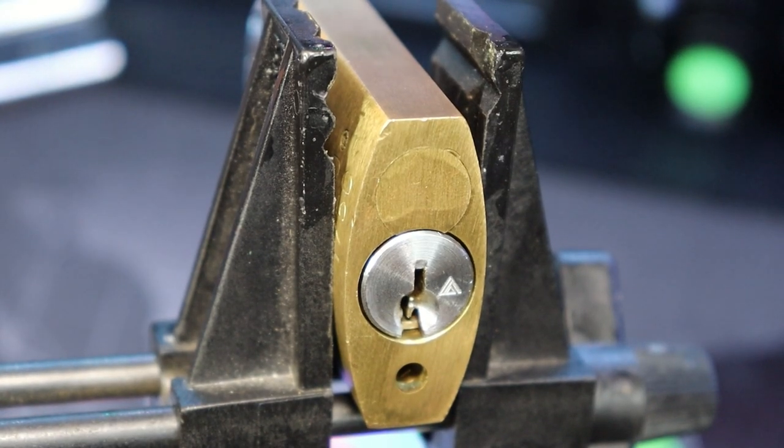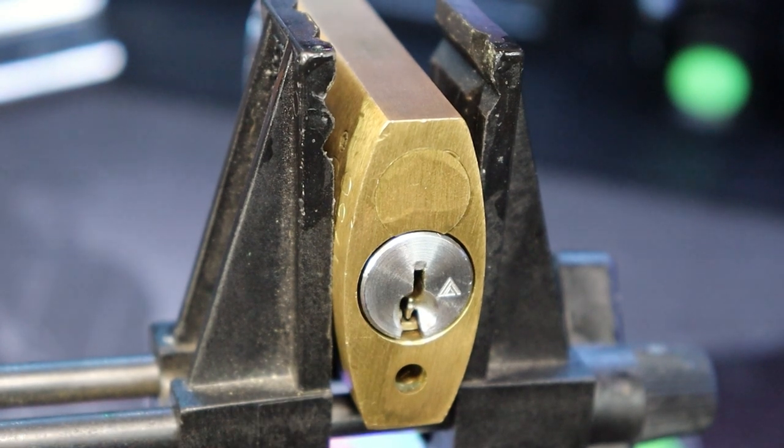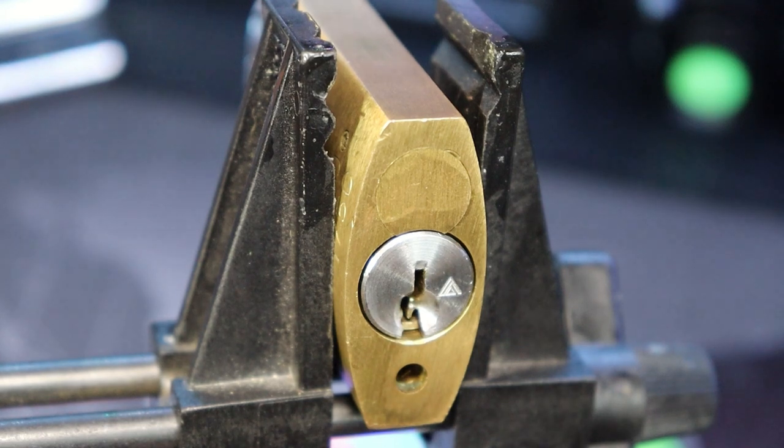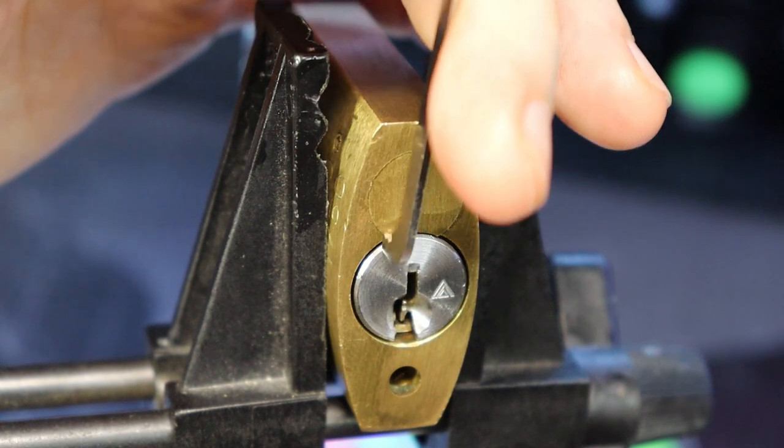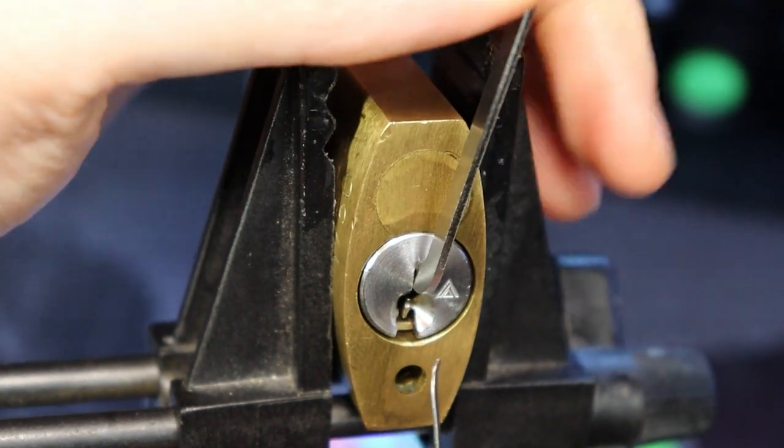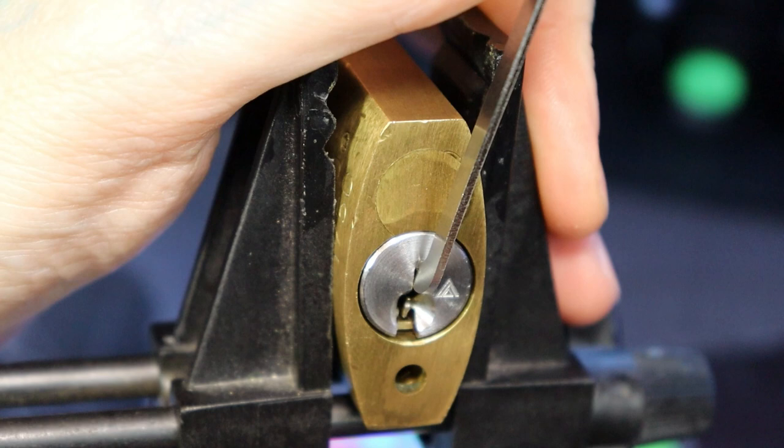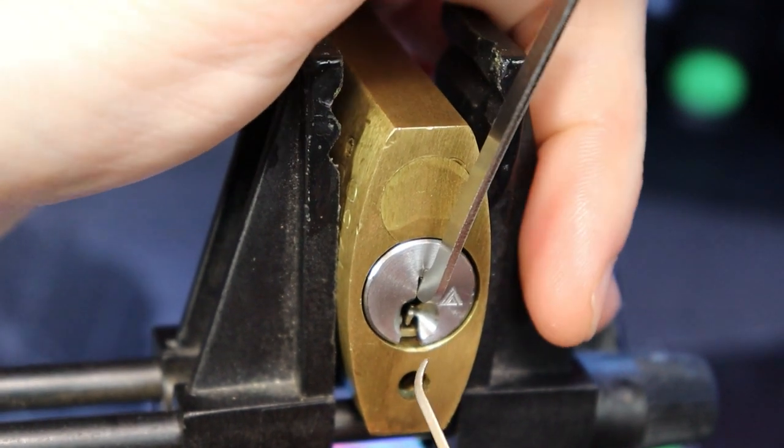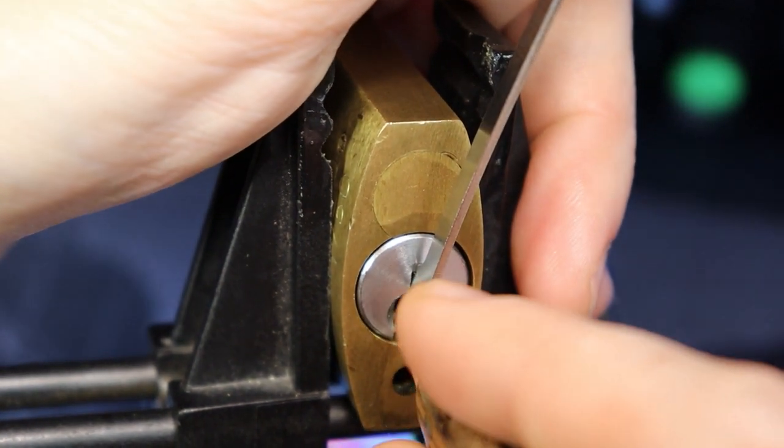Hello, LockpickingDev. Today I have a Schlage Everest, most notable by its little mountain icon right here. Don't confuse it with the Primus, the one with the finger pins. This one is not really high security. It has all standard pins, six standard pins, with one little check pin down here that you have to lift up. So let's go ahead and open this up and show you what's inside.